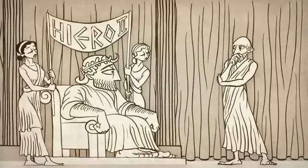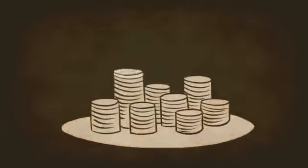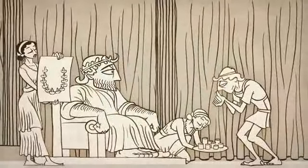One day, Archimedes was summoned by the king of Sicily to investigate if he had been cheated by a goldsmith. The king said he had given a goldsmith the exact amount of gold needed to make a crown.